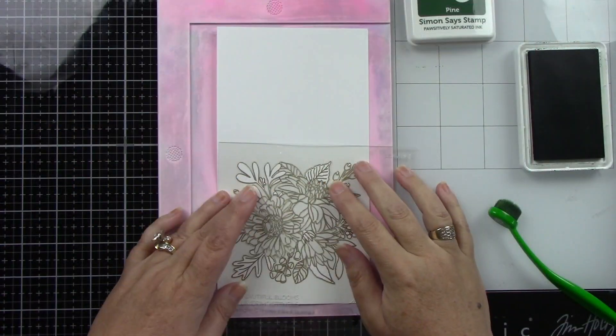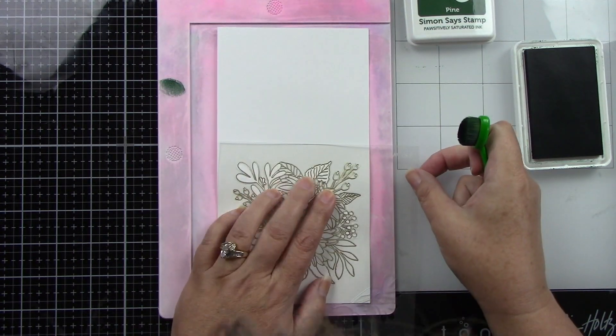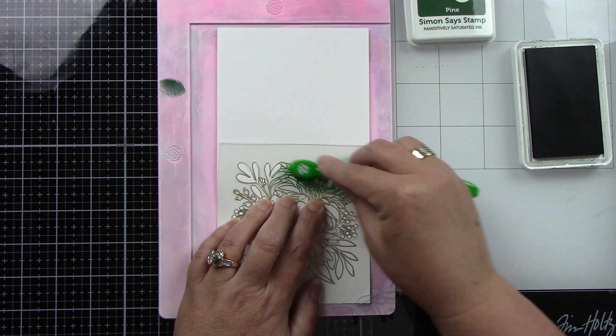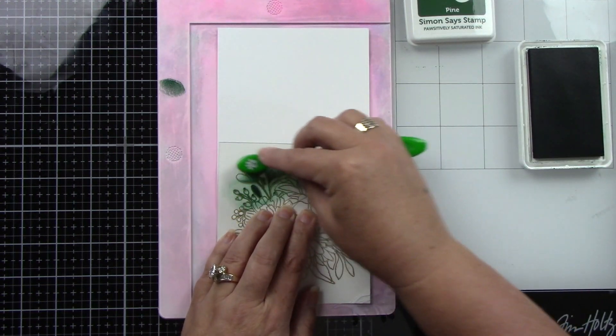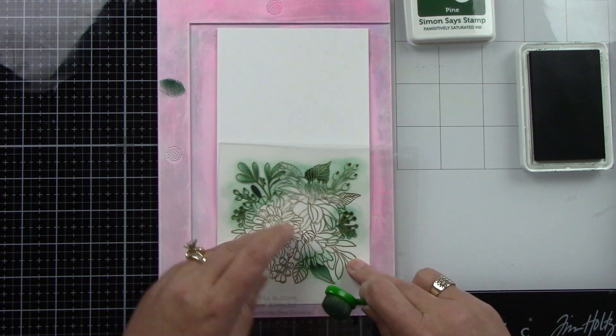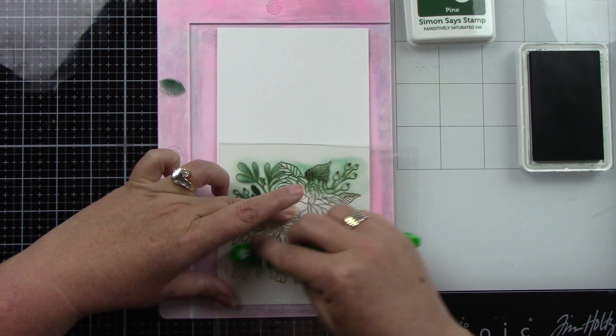There's four layering stencils and they're actually labeled like Leaves 1 and 2, because there's two of those, and then berries and flowers and things like that, so it's really easy to do. I'm using some darker green ink. I'm using Simon Says Stamp's Positively Saturated Inks and this is Pine.